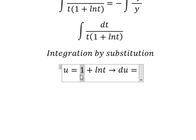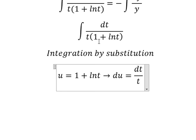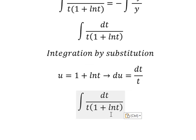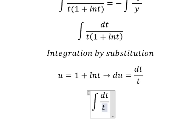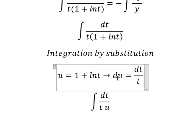First derivative of one is zero because this is a constant. First derivative of ln t we have one over t and we have dt. So dt over t we change by du.